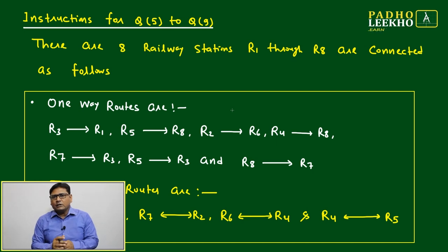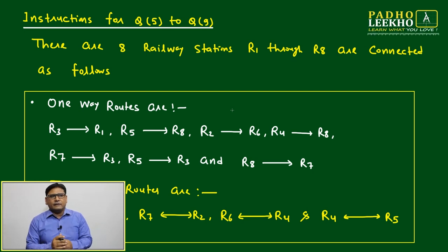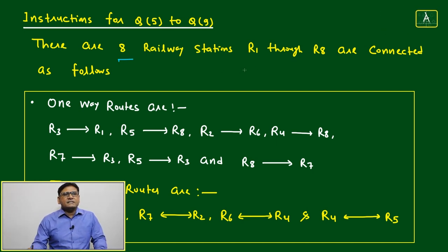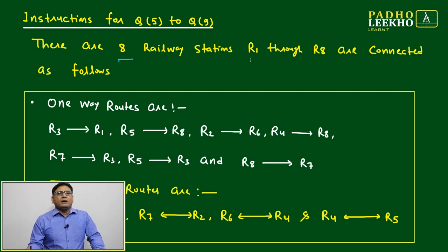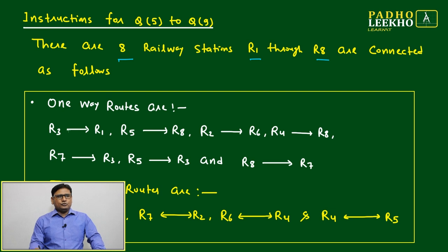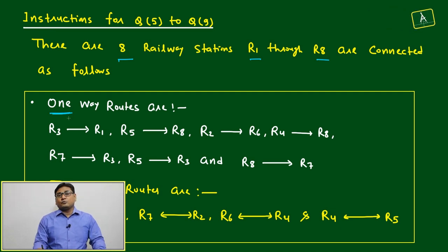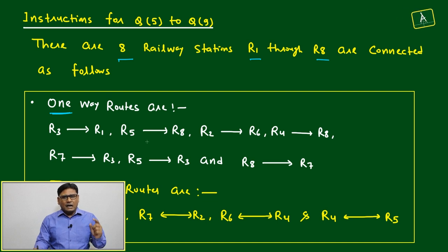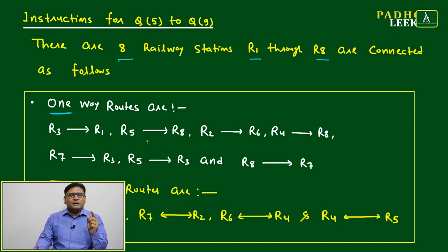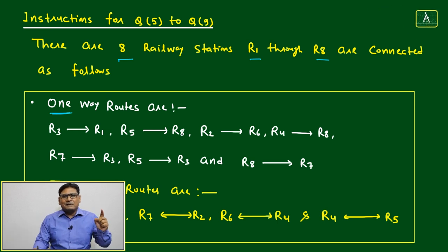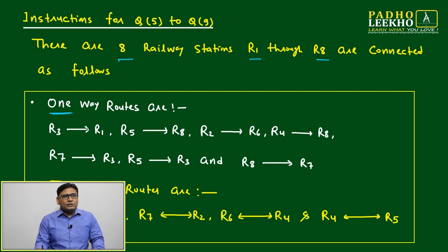To give you more idea on how to deal with routes and networks: there are eight railway stations from R1 to R8. The type of route matters. One-way routes — such as R3 to R1 — mean you can go from R3 to R1 but cannot come back by the same route. Only the direction of the arrow is valid for movement.